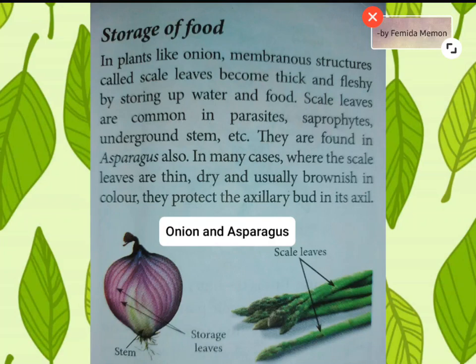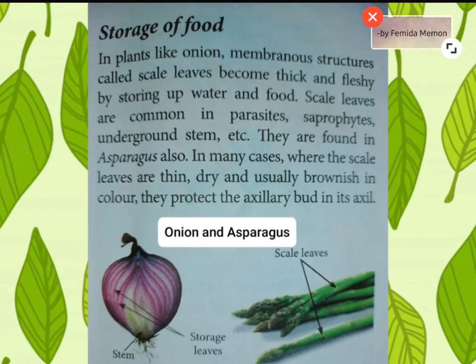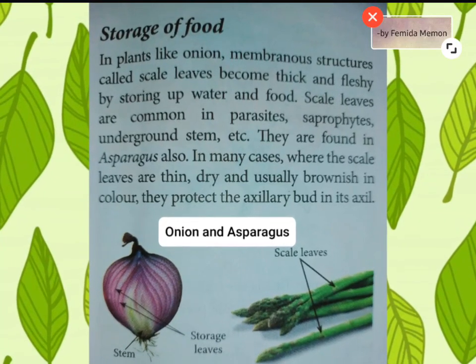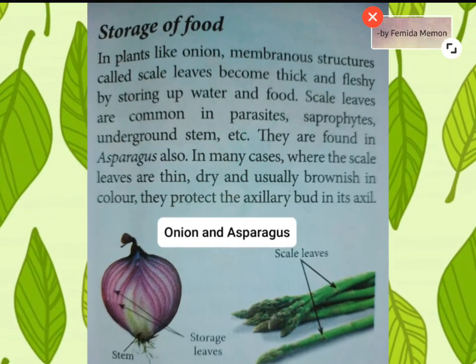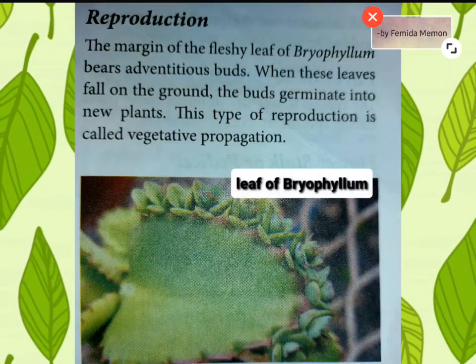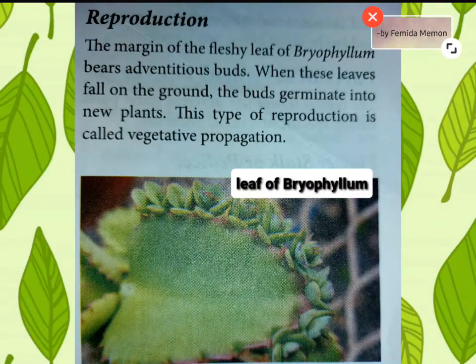In many cases where the scale leaves are thin, dry and usually brownish in color, they protect the axillary bud in their axil. Number six, reproduction: the margin of the fleshy leaf of Bryophyllum bears adventitious buds. When these leaves fall on the ground, the buds germinate into new plants. This type of reproduction is called vegetative propagation.